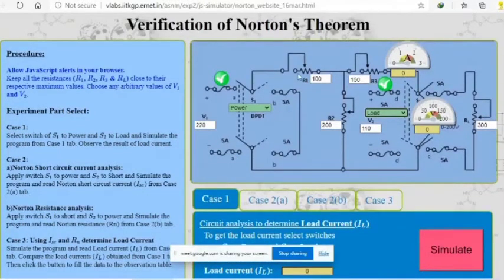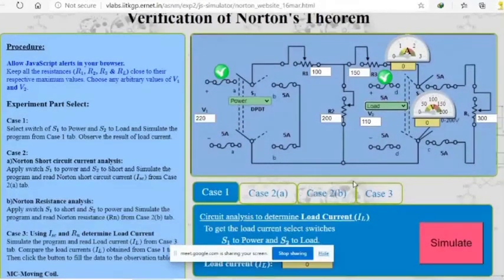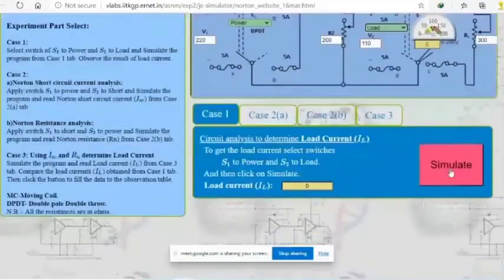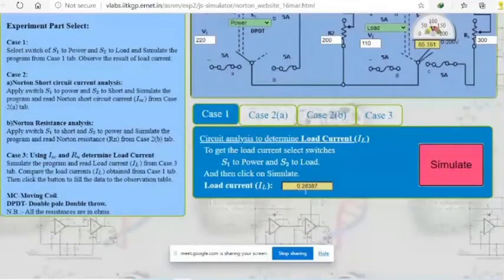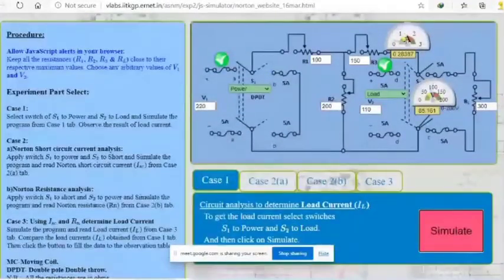We can have different values of this R1, this R3, this R2 here. This is our ammeter. This is our voltmeter. In case 1, when we simulate we will find load current IL as 0.28387 using this ammeter.